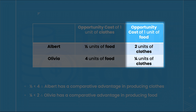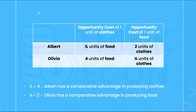An important point to remember is that it is mathematically impossible for someone to have a comparative advantage in both goods. If one person — in this case Albert — has a comparative advantage in producing one good, then the other person — in this case Olivia — must have a comparative advantage in producing the other good. It is possible for no one to have a comparative advantage, and this only happens when the two people have the exact same opportunity costs.